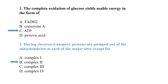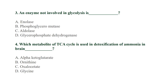Protons are pumped out of the mitochondria at each of the major sites except for Complex II — there is no pumping of protons out of the mitochondria at Complex II. An enzyme not involved in glycolysis is glycerophosphate dehydrogenase, which is not involved in the glycolysis pathway.